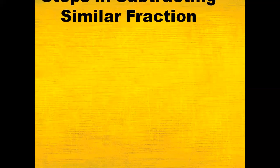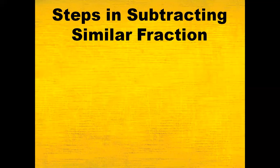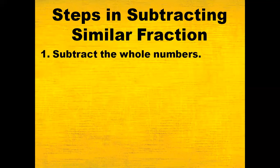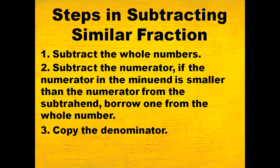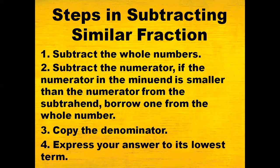Before that, let us first discuss and review the steps in subtracting similar fractions. Step 1: subtract the whole numbers if the given fraction is a mixed number. Step 2: subtract the numerators. If the numerator in the minuend is smaller than the numerator from the subtrahend, borrow one from the whole number. Step 3: copy the denominator. And step 4: express your answer in its lowest term if needed.